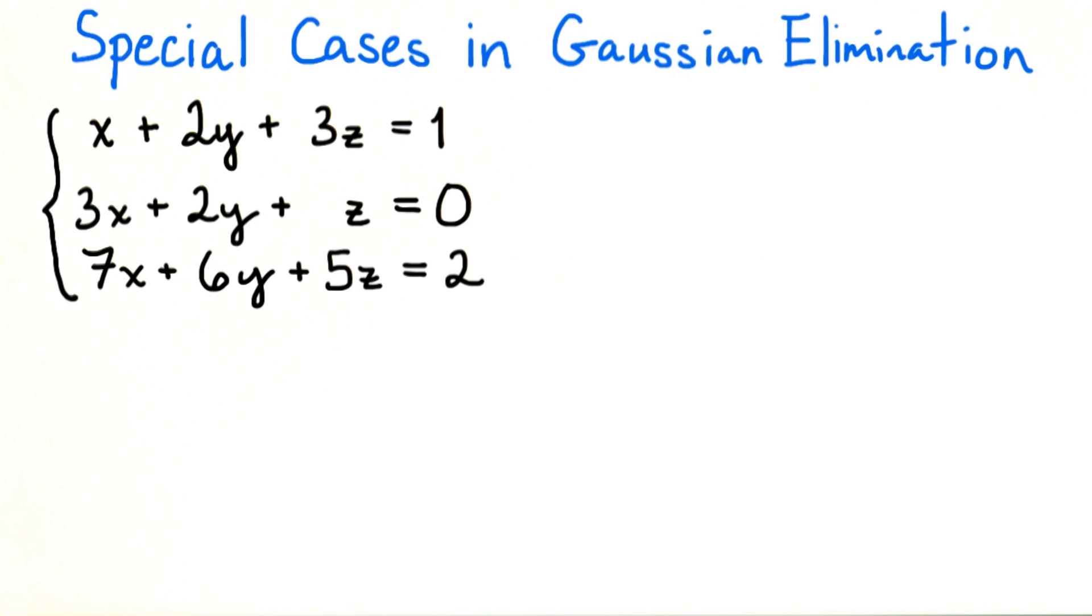x plus 2y plus 3z equals 1, 3x plus 2y plus z equals 0, 7x plus 6y plus 5z equals 2. We can start solving the system as usual, clearing the terms beneath the top x term.